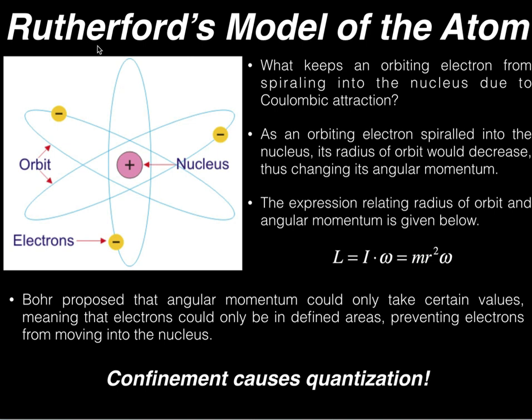Rutherford's model doesn't actually make physical sense because these electrons should, by both virtue of orbit and their Coulombic attraction, spiral into the nucleus. But they don't. We know they don't, so there has to be something that's preventing them from collapsing into the nucleus.